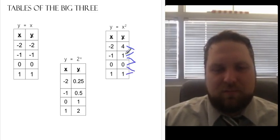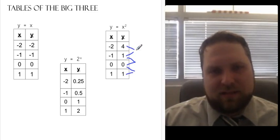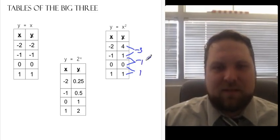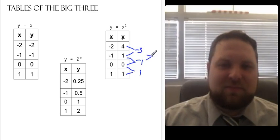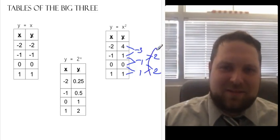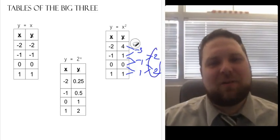So one minus four is going to be, let's see, negative three. Zero minus one is negative one. One minus zero is positive one. Now if I take negative one minus negative three, I get two. One minus negative one is two. There's my constant second difference. It's quadratic.